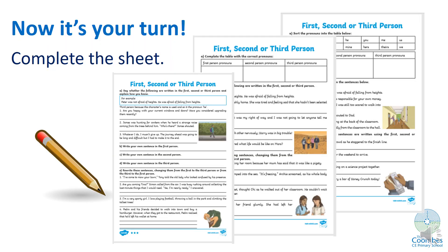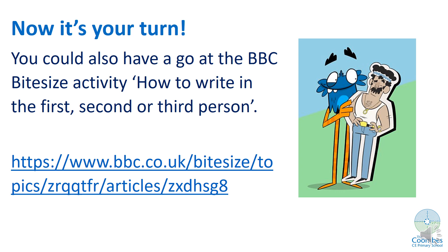If you did get them all right and you understand the difference between first, second, and third person, then you're ready to move on. There are some sheets for you to complete — three different levels. Pick the one that fits your ability and complete it. If you want to and have time, you might also want to try the BBC Bitesize activity 'How to write in the first, second, or third person'. Google it or use the link provided. There's more information, quizzes, and games to play. Have fun, and I'll see you tomorrow.